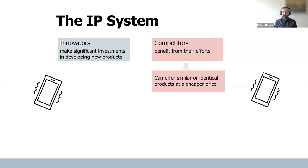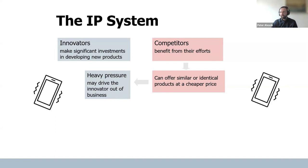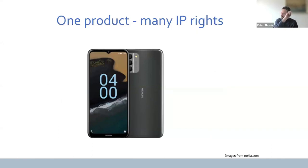The IP system provides innovators with ownership over their work and the rights to exclude competitors from production, import, and sales of those goods. In one product there are actually many IP rights. Take a phone: for sure there's a brand — so trademark. There's copyright covering tunes, ringtones, images, user manuals, and software. But also patents and utility models — like how the phone connects to the base station via cell network.